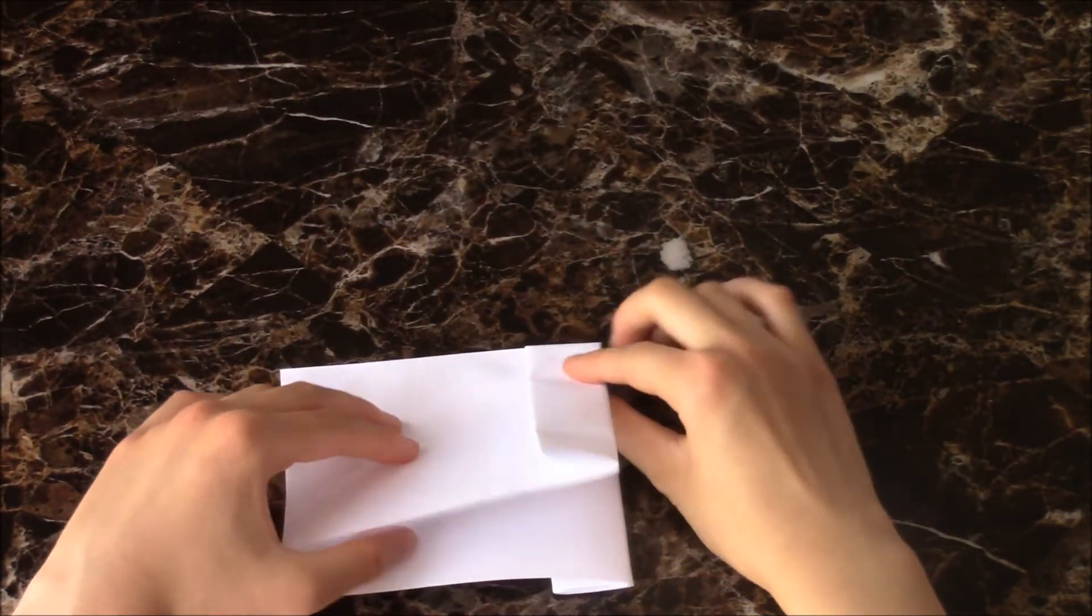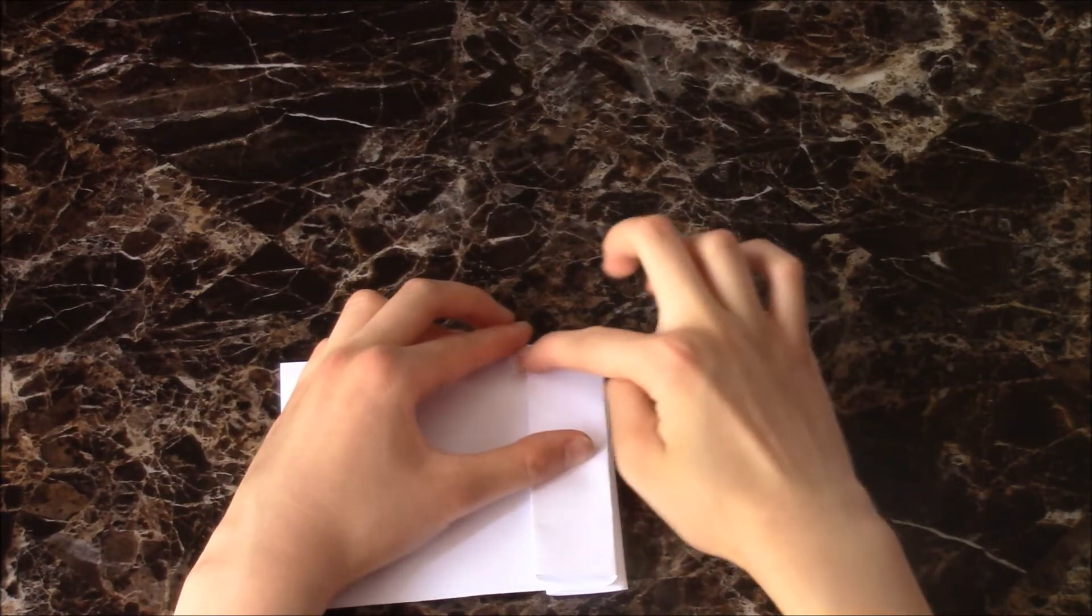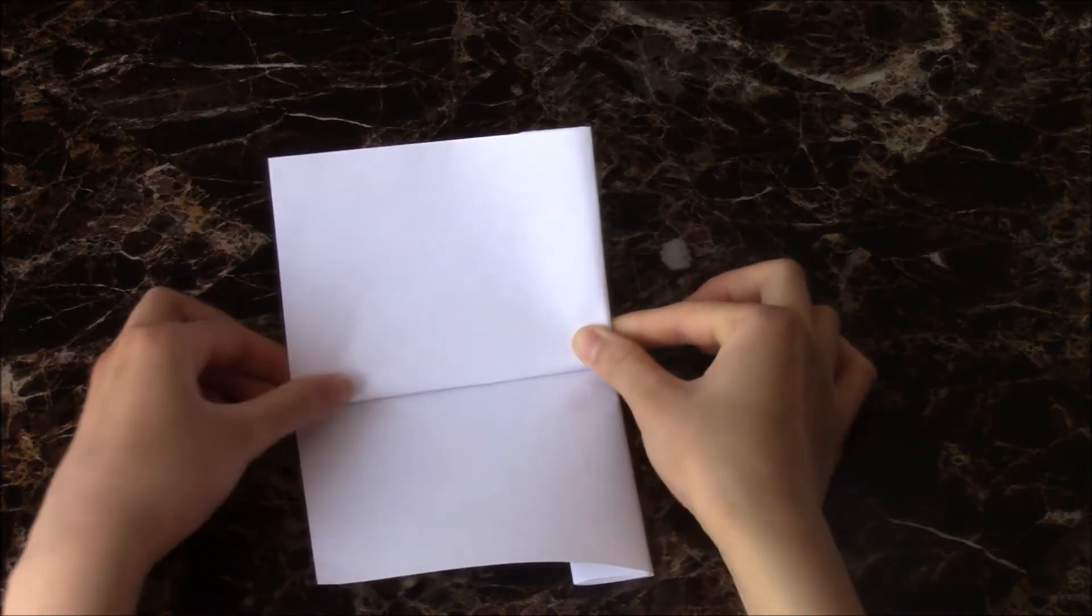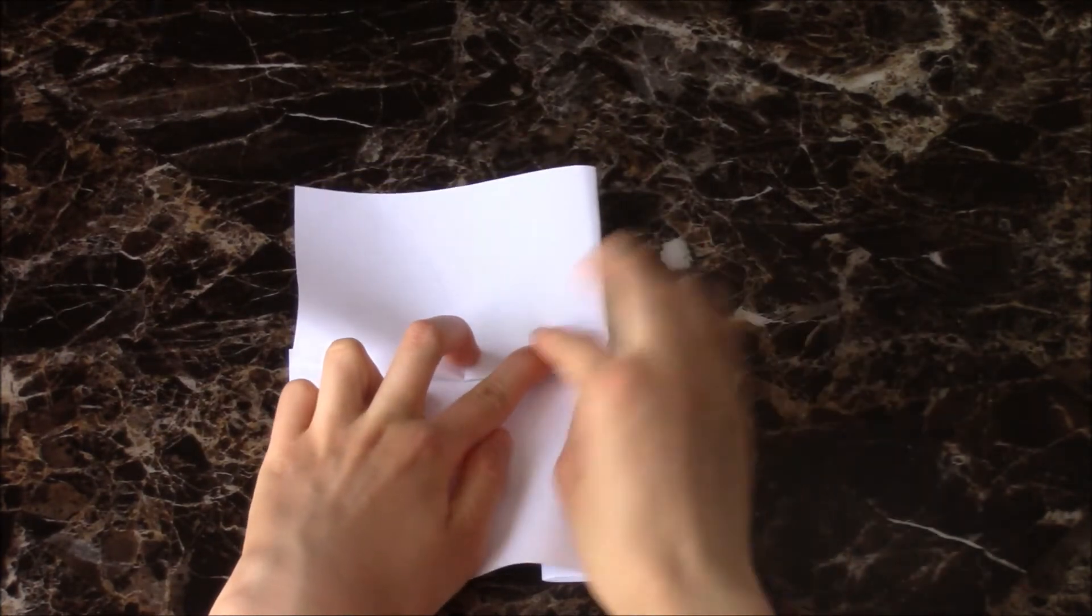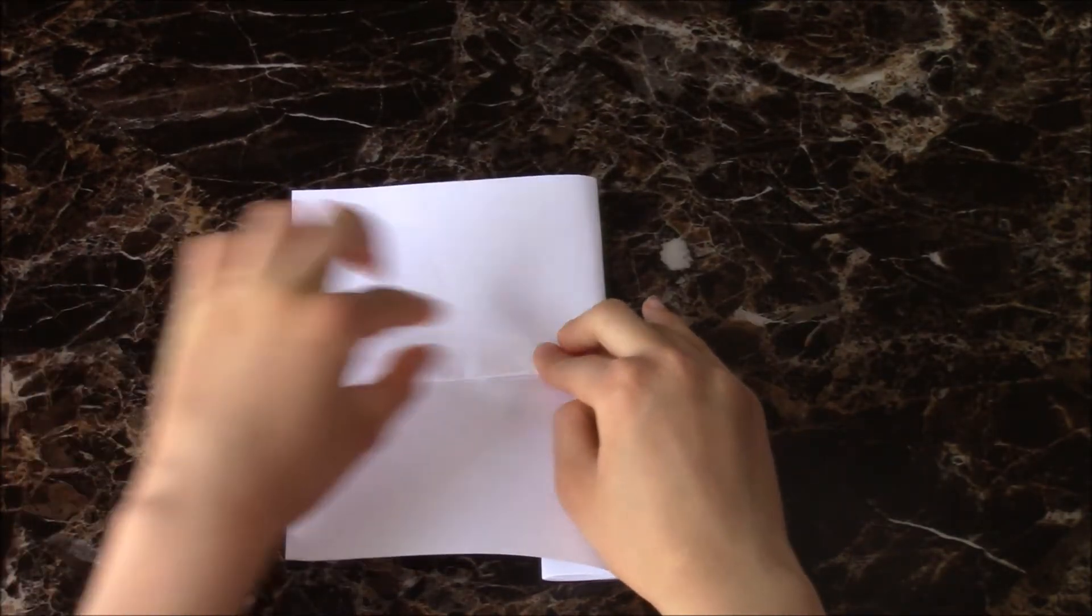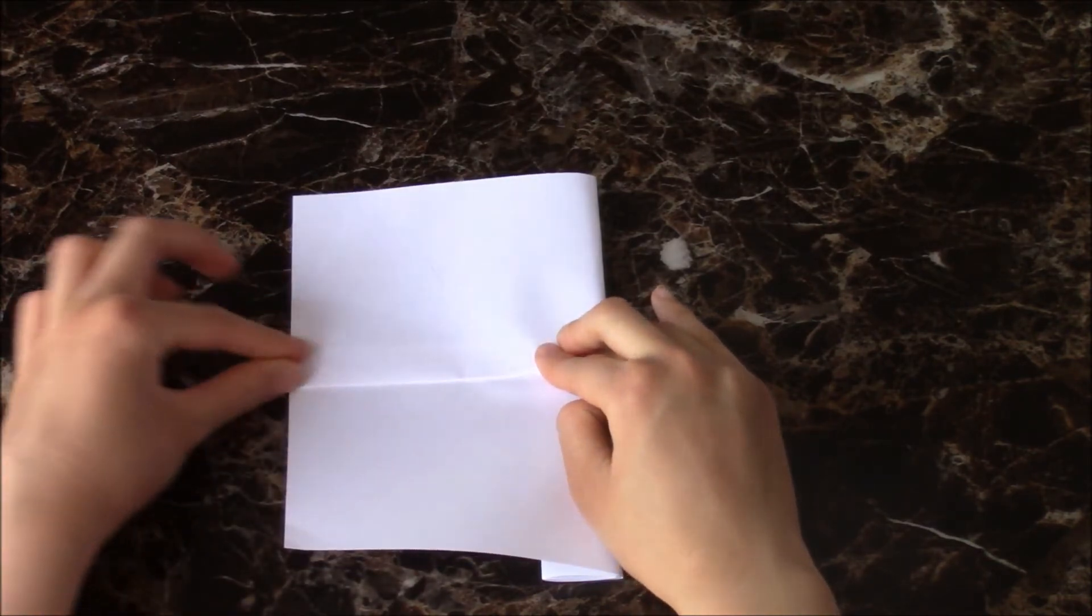To make the wings, fold the paper, leaving a little bit of space between the edge. Crease it.